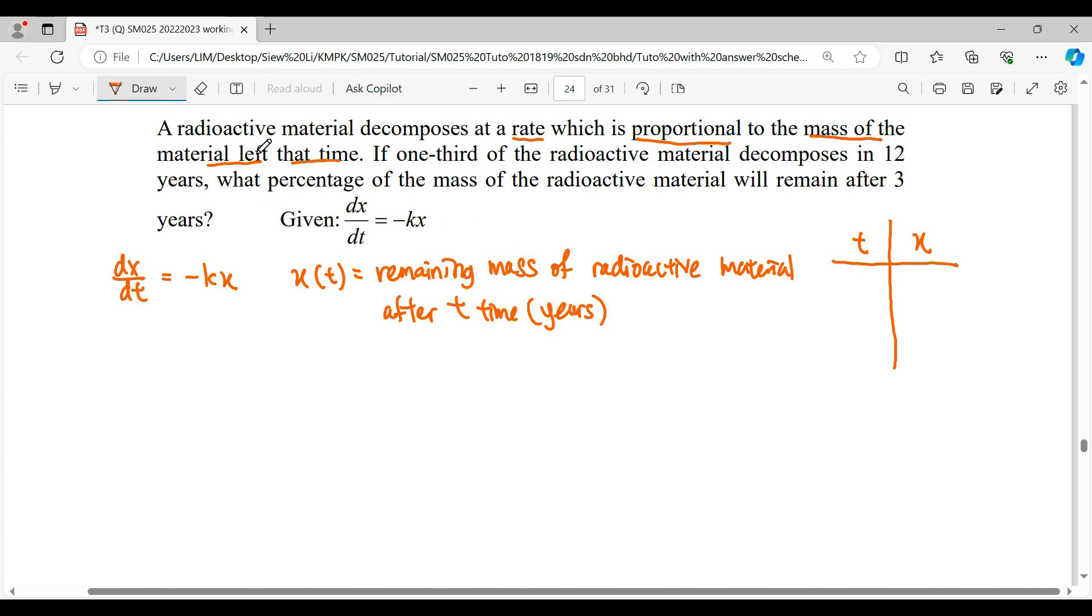And then another unknown here which is x, which is your material left. So initial state, when our story starts at zero, we will have the original concentration of your radioactive material.